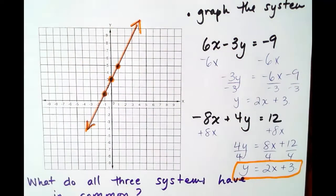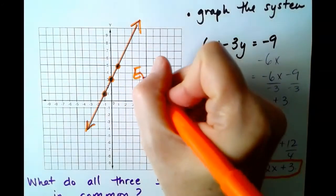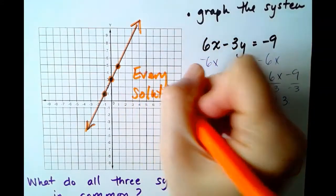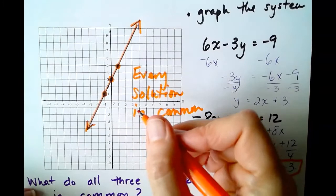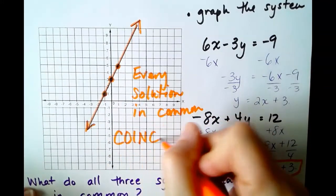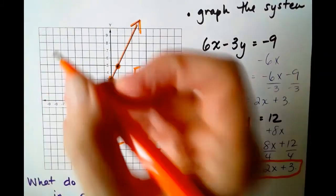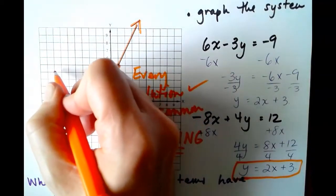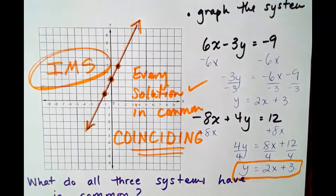It would be lying directly on top of the first line. So if we want to know what is the solution to this system, it's not that it has no solutions in common. It has every solution in common. We will say that these two lines are coinciding. These two lines are coinciding. They share every single point in common. So this is not a no solution. This is an every possible solution, or as we saw back in chapter 1, there are infinitely many solutions to this problem.